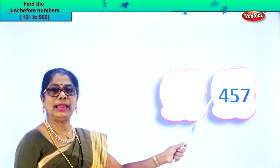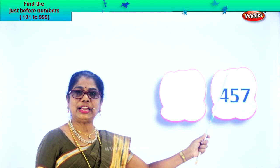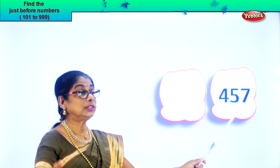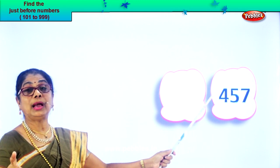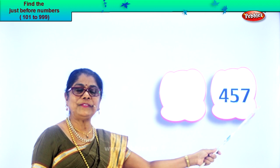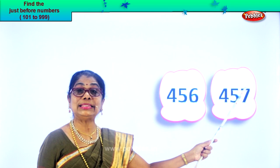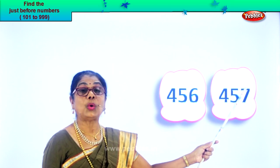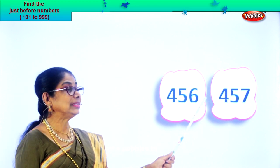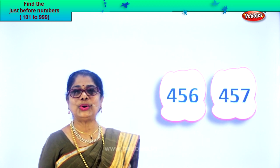Four hundred and fifty-seven. Seven in the ones place, five in the tens, and four in the hundreds place. Read the numeral: four hundred and fifty-seven. One less than seven is six. One less than fifty-seven is fifty-six. So four hundred and fifty-six, four hundred and fifty-seven.